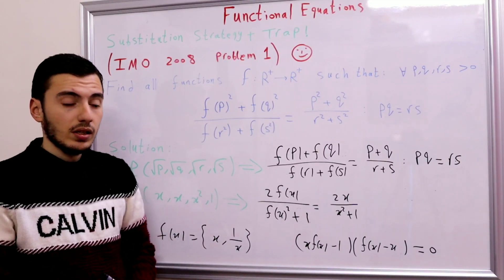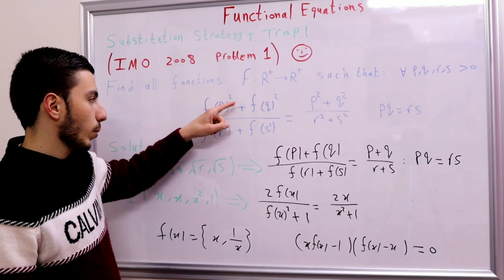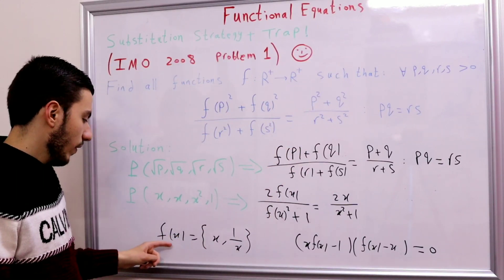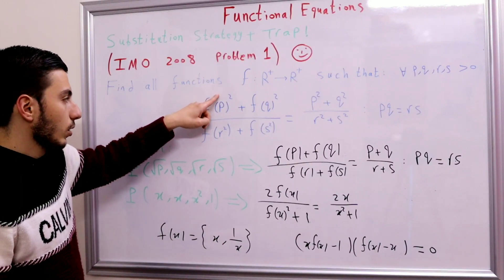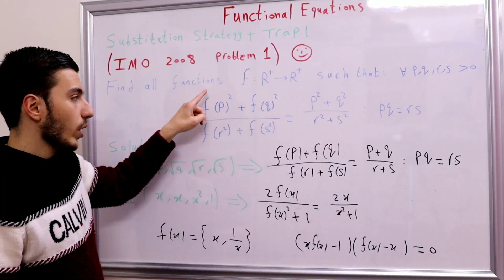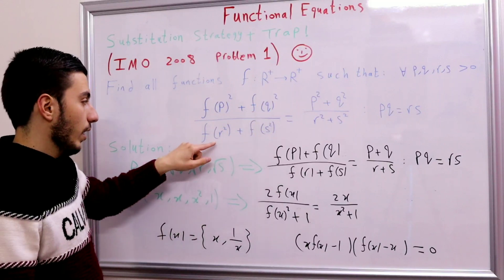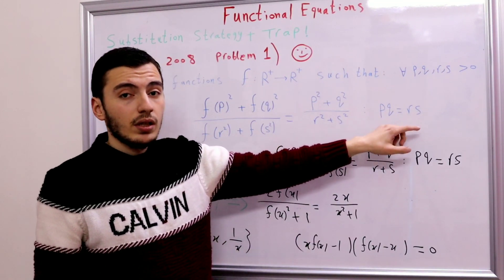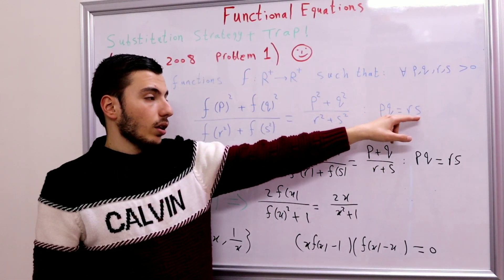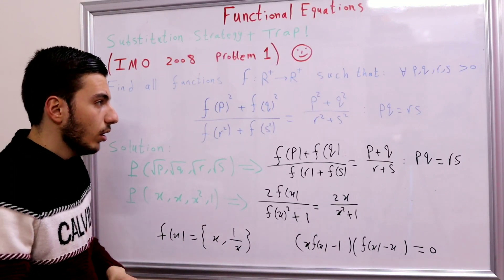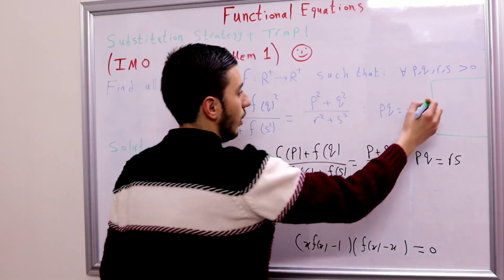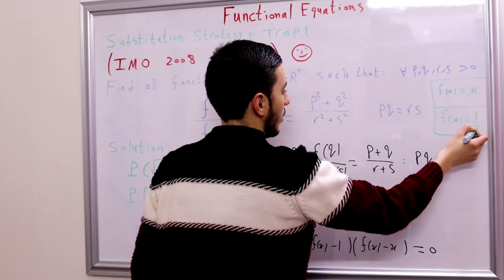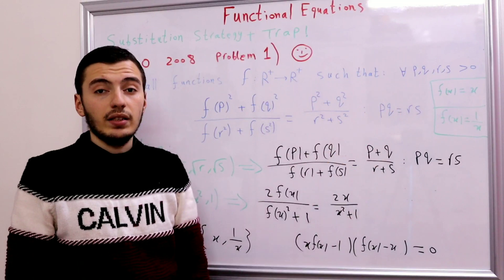Let's check both cases. If f(x) = x, then (p² + q²)/(r² + s²) equals the left-hand side — yes, it's a solution. If f(x) = 1/x, then (1/p² + 1/q²)/(1/r² + 1/s²) = (p² + q²)/(p·q)² · (r·s)²/(r² + s²), and since p·q = r·s we can cancel, confirming it's also a solution. So our candidate solutions are f(x) = x and f(x) = 1/x.